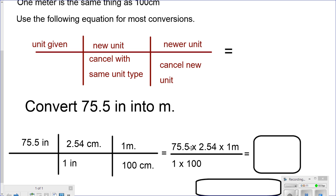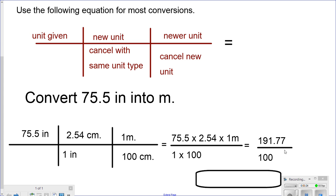75.5 times 2.54 times 1 divided by 1 times 100 gives me 191.77 divided by 100. Therefore, when I plug that into the calculator, I end up with 1.9177 meters. Again, I am ignoring significant figures at this point.